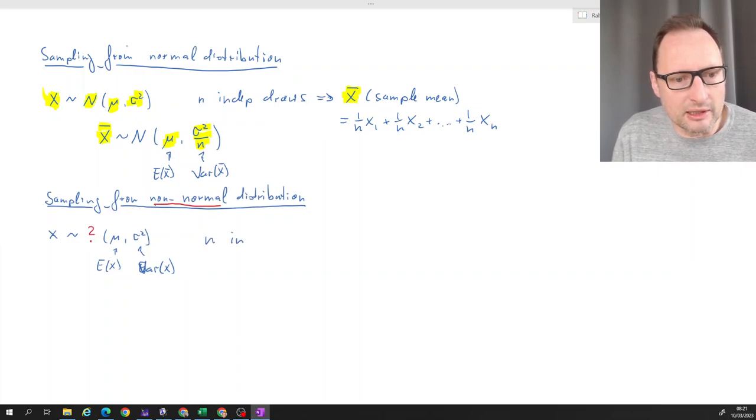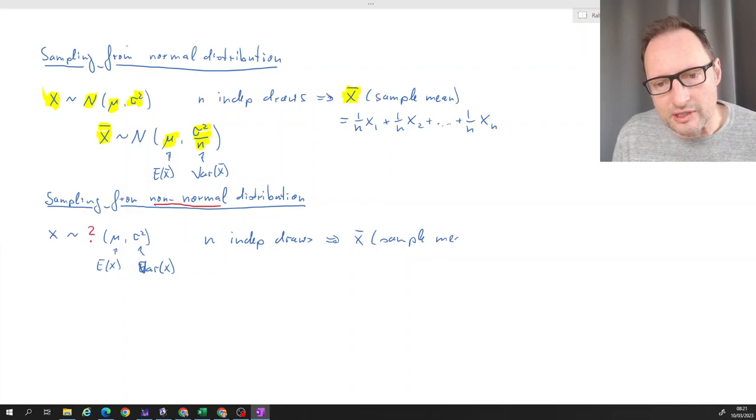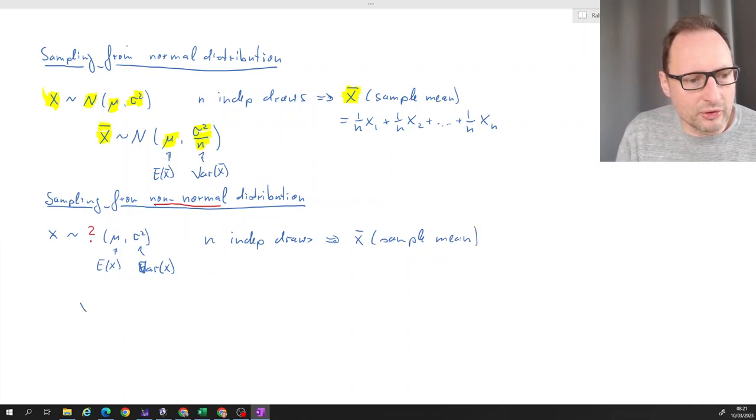We are still drawing n independent draws from this and we are still interested in the sample mean of this sample. So what we've derived before is we still understand that x̄ is a random variable.